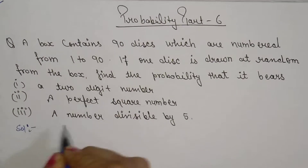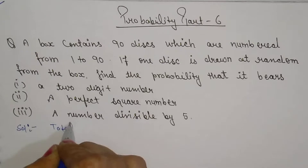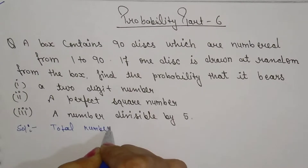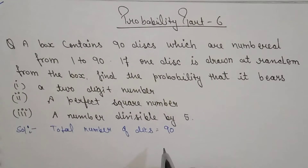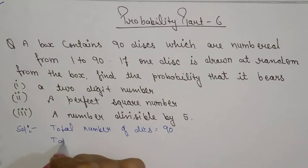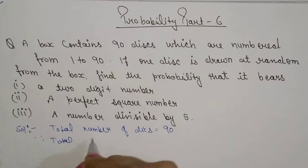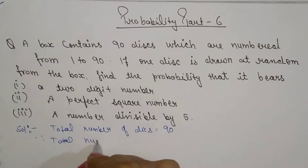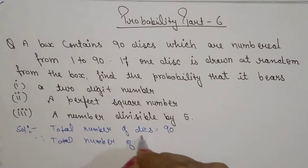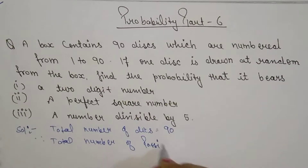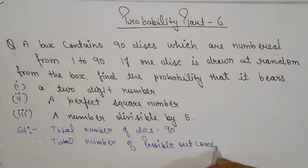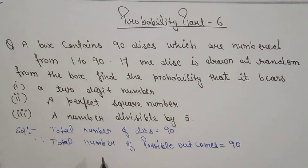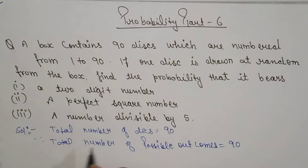First, we need to know the total number of discs, which is equal to 90. So the total number of possible outcomes will be 90.